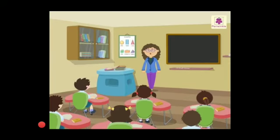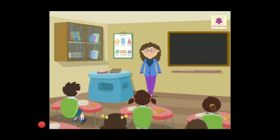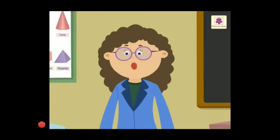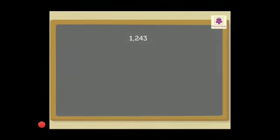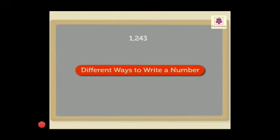We already know the different ways to write a three-digit number. Today, let us take the four-digit number, one thousand, two hundred, forty-three, and show it in different ways. Let us begin.